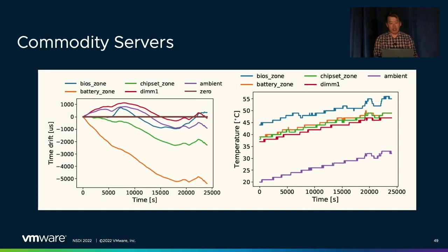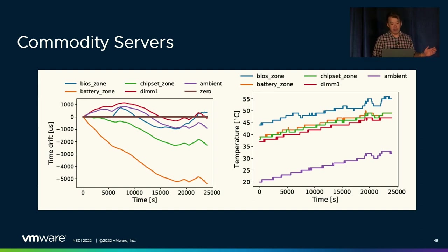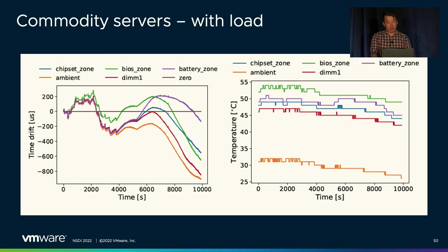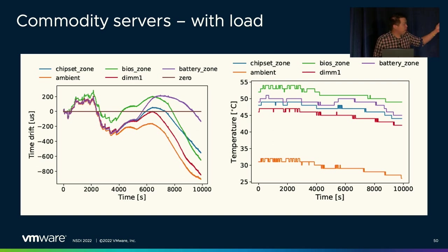While our results generally translated well to commodity servers, they have the additional challenge of multiple sensors. Our solution identifies the best sensor — the one with the closest fit to the corrected time — by tracking experiments and learning linear equations in parallel. In this experiment, the DIMM sensor has the best fit. The ambient temperature sensor and chip sensor performed well initially but began to deviate over time due to non-uniform heat distribution. Applying random loads varying between memory-heavy and CPU-heavy workloads, we found that DIMM sensors generally perform best, perhaps because they have thin PCBs and respond quickly to environmental changes.